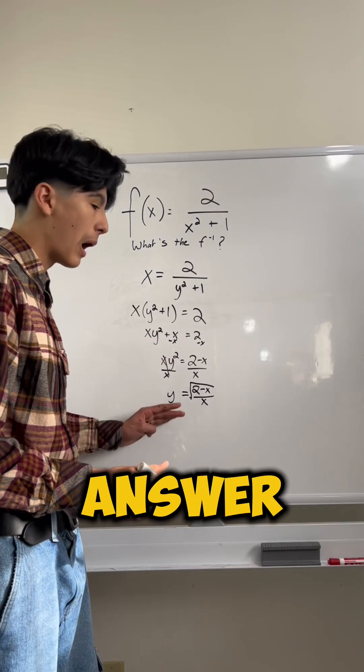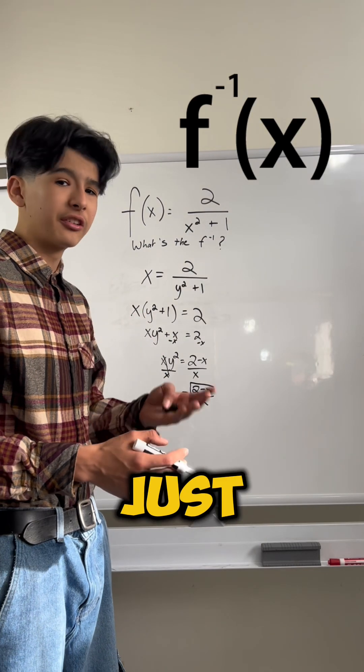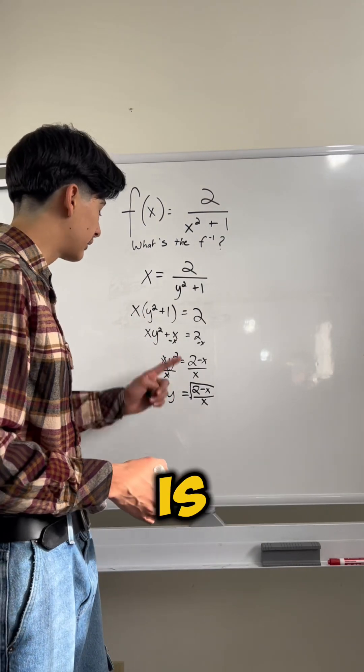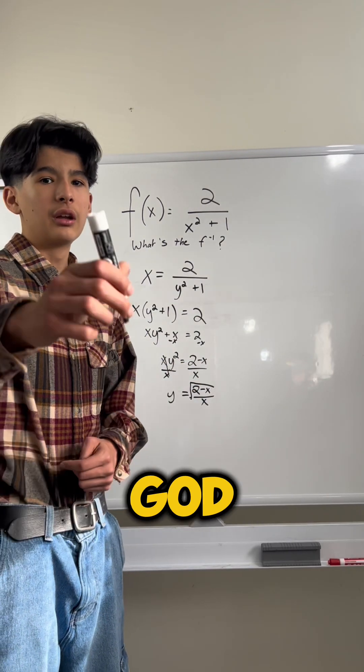And this is our final answer. Y, which could be written as f to the negative power of x, that just symbolizes an inverse function, is equal to radical 2 minus x over x. God bless.